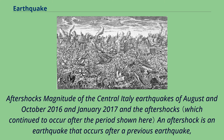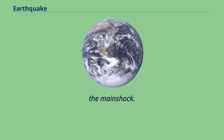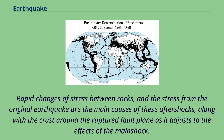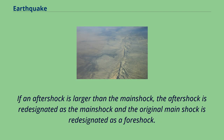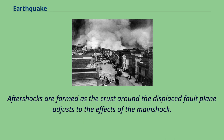An aftershock is an earthquake that occurs after a previous earthquake — the main shock. Rapid changes of stress between rocks and the stress from the original earthquake are the main causes of aftershocks, along with the crust around the ruptured fault plane adjusting to the effects of the main shock. An aftershock is in the same region as the main shock but always of a smaller magnitude; however, they can still be powerful enough to cause damage to buildings already damaged from the original quake. If an aftershock is larger than the main shock, it is re-designated as the main shock and the original is re-designated as a foreshock.